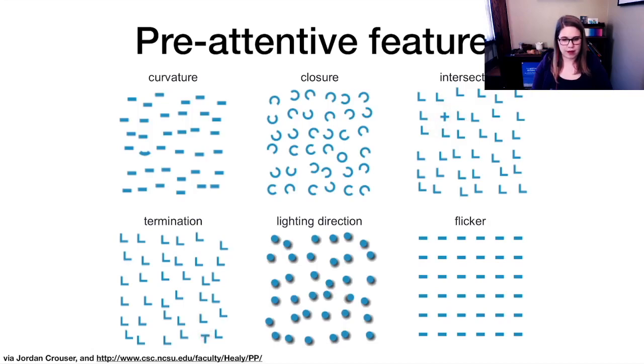Termination, we can capture that very quickly. Lighting direction, I don't know that I can do this quite as quickly, but I can pick out the one that has different lighting direction pretty easily. And I don't have a GIF here, so I don't have an actual flicker. But if there was a flicker, you'd be able to determine that as well.